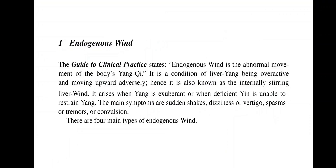Endogenous Wind: The guide to clinical practice states that endogenous wind is the abnormal movement of the body's yang qi. It is the condition of liver yang being overactive and moving upward adversely. Hence, it is also known as internally stirring liver wind. It arises when yang is exuberant or when deficient yin is unable to restrain yang. The main symptoms are sudden shakes, dizziness or vertigo, spasms or tremors, or convulsion.